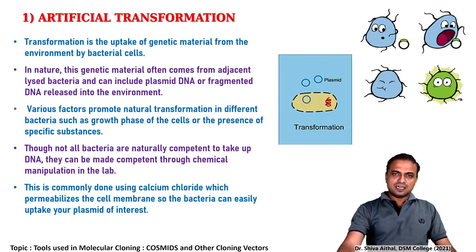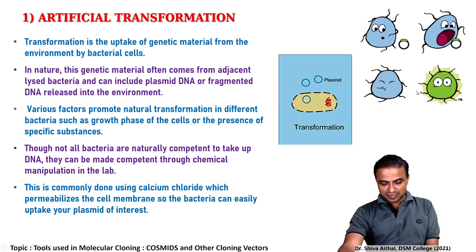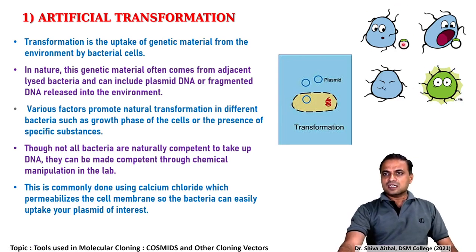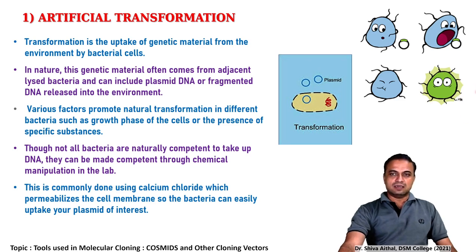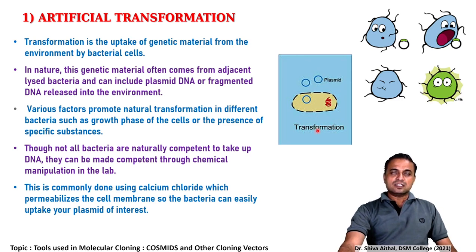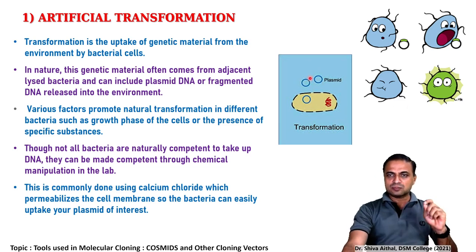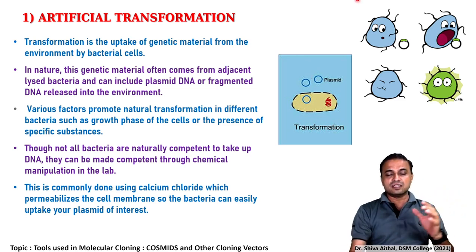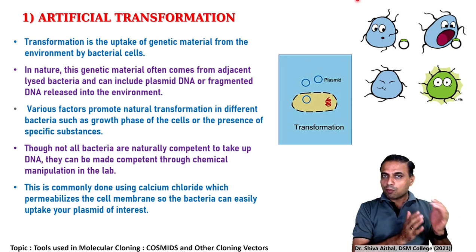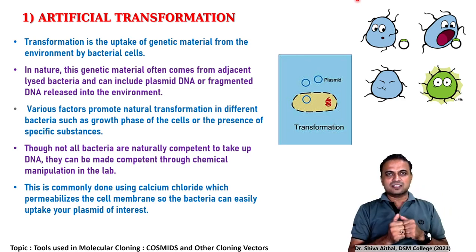First, let us see artificial transformation. Any bacteria which takes up a plasmid containing your gene of interest becomes a transformed cell. A plasmid introduced into a bacteria results in a transformed cell. The main problem here is that this plasmid containing your gene of interest is not entering by natural transformation, where we rely on competence — a phenomenon where the cell uptakes DNA.